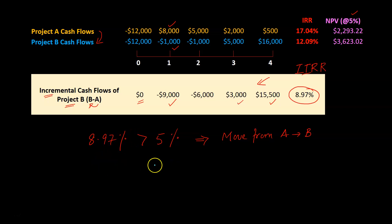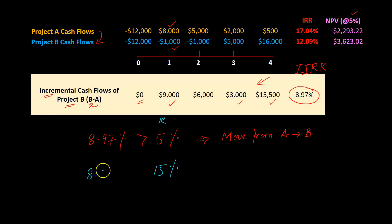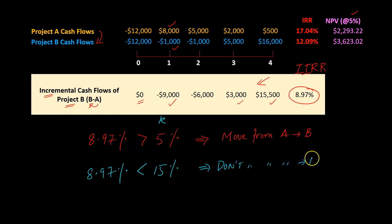In contrast, suppose our discount rate K is something like 15%. In that case, because 8.97% is less than 15%, we would say don't make the move — don't move from A to B. Why? Because the extra rate of return you're getting as you make this move is less than what you could have done elsewhere with this money.